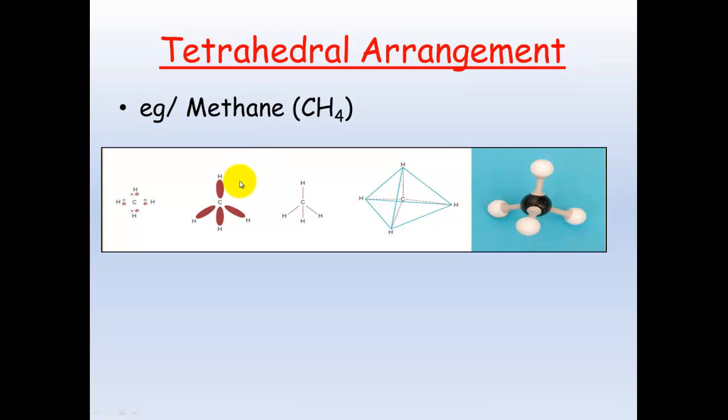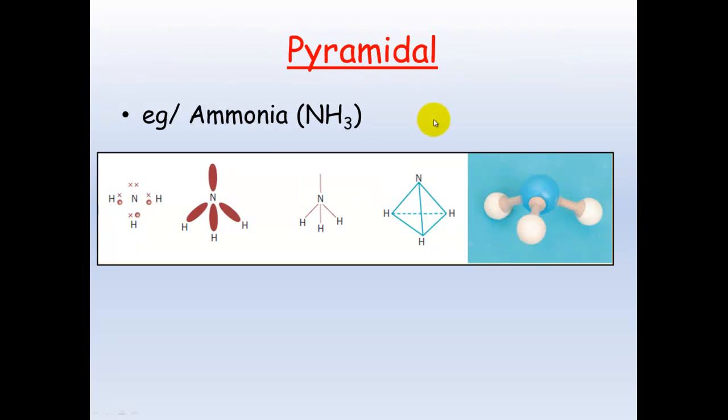Methane's another good example. You've got carbon in the middle with hydrogens as far apart from each other as they can be. This is what it looks like when we do the modeling. Pyramidal shape: you've got ammonia, NH3.